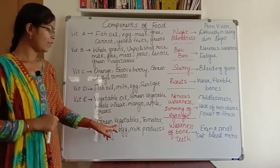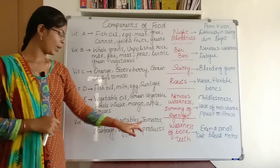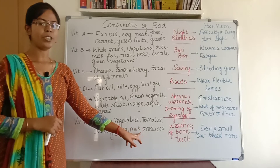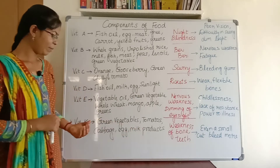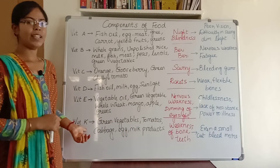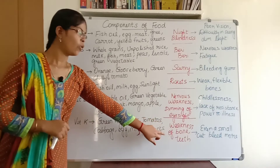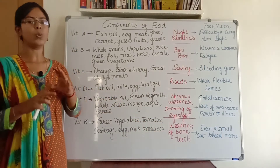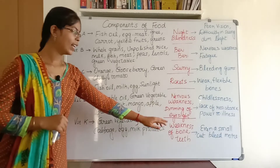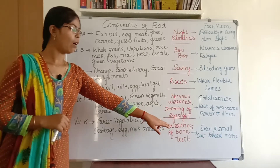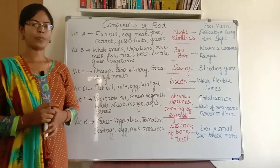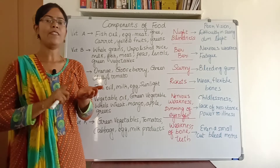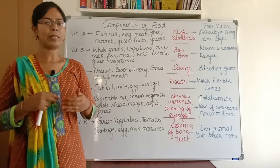Vitamin K is present in foods like green vegetables, tomatoes, cabbage, egg, and milk products. The deficiency of vitamin K may cause weakness of bones and teeth. The symptoms include excessive bleeding — even a small cut in our skin will cause blood to not stop, it will continuously flow.